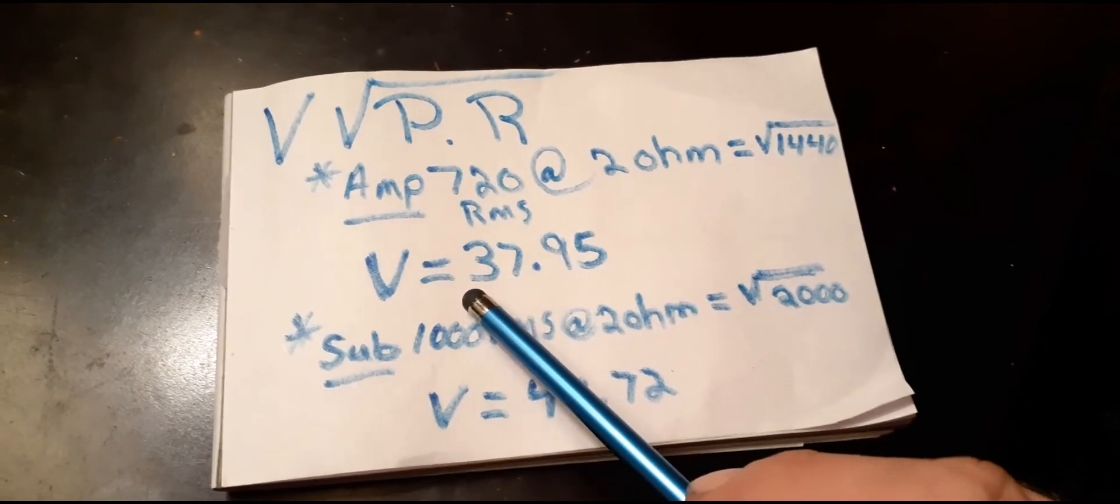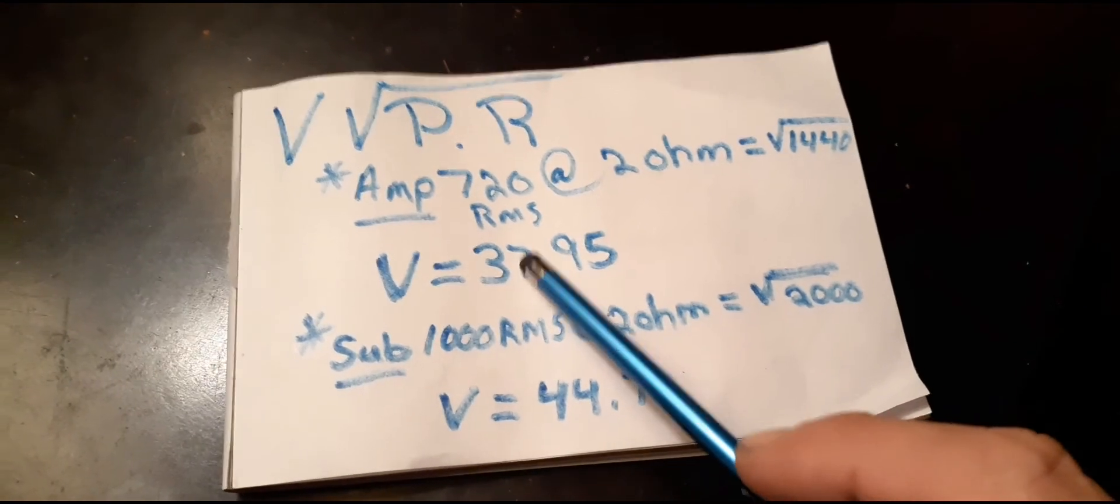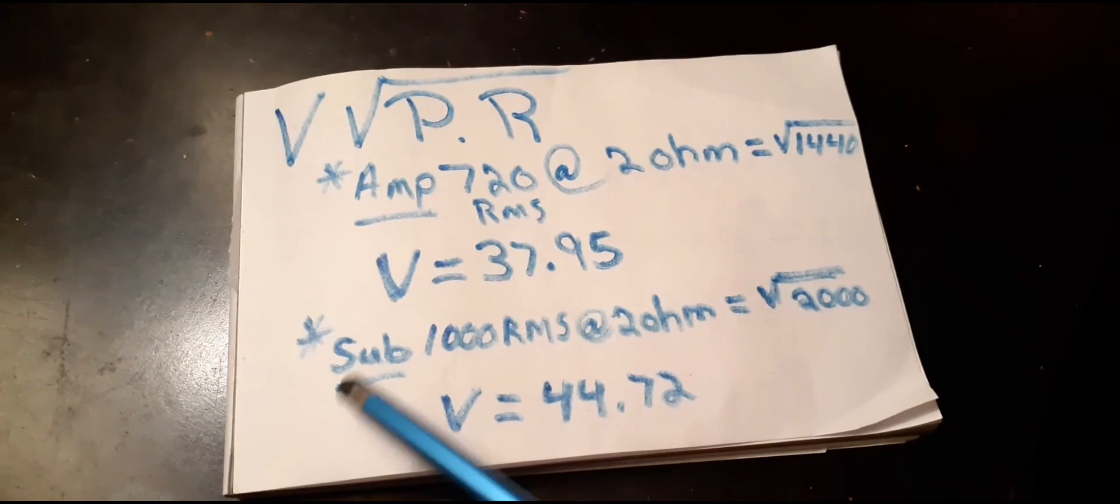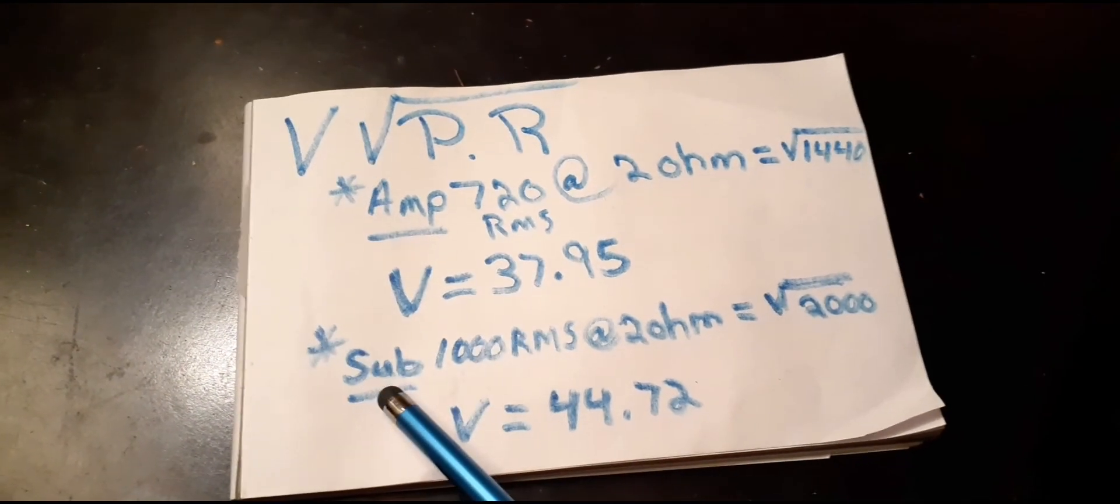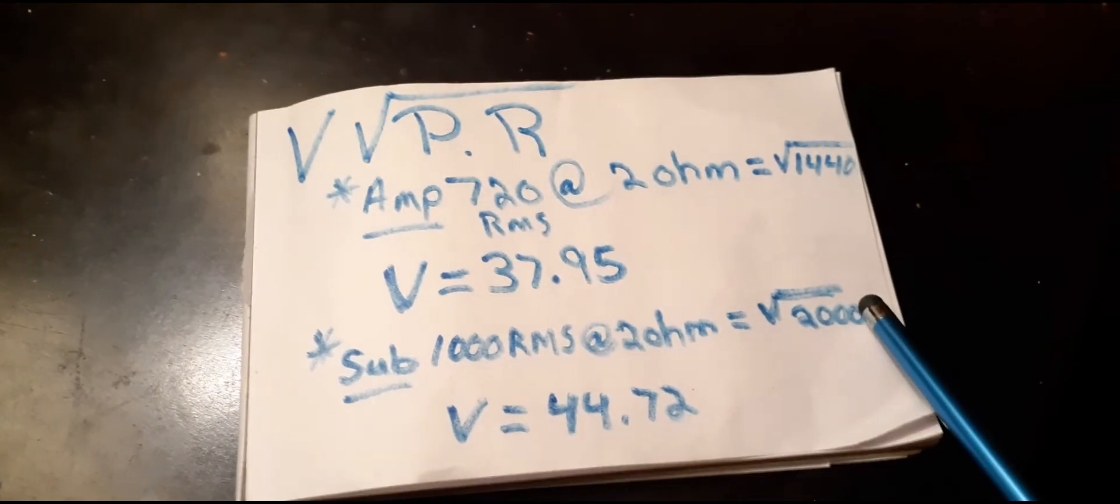But I rounded that up, so you might as well say you can round this up to 38 volts. If I went by the sub rating, thousand RMS at two ohms, 2000 square root, the voltage is 44.72.